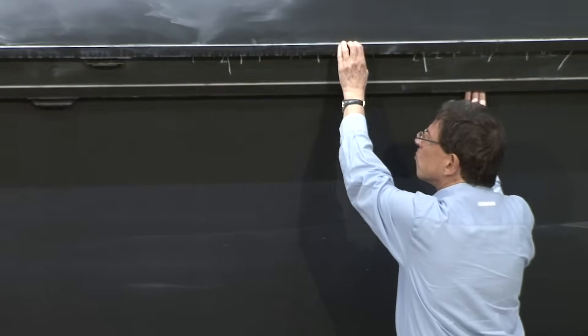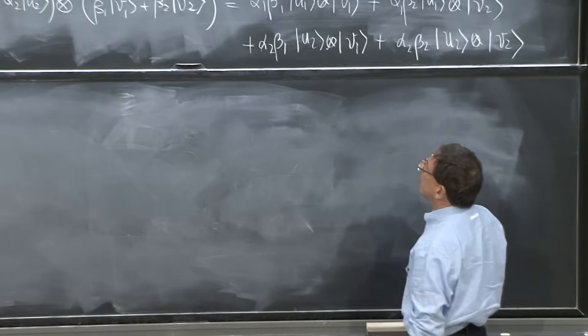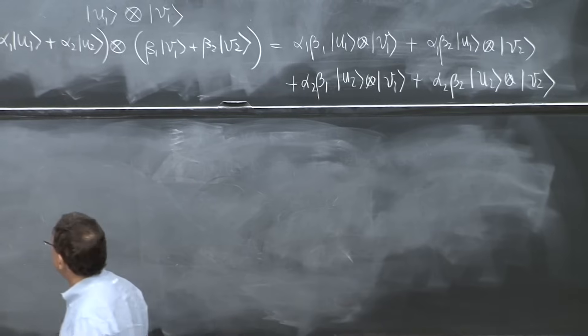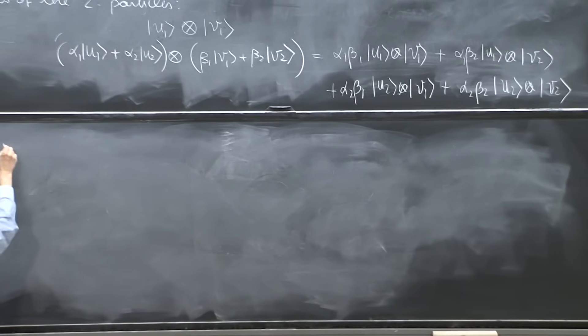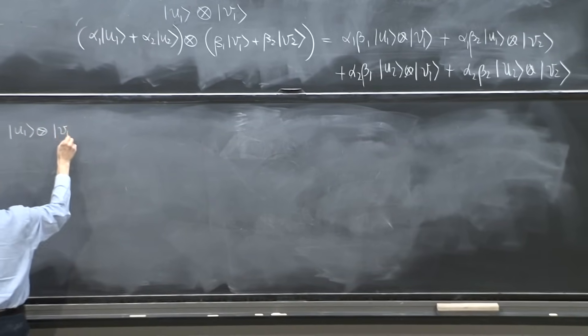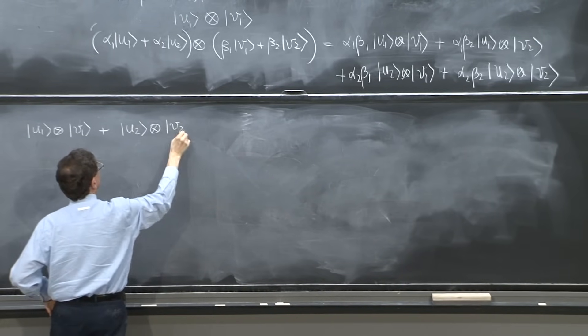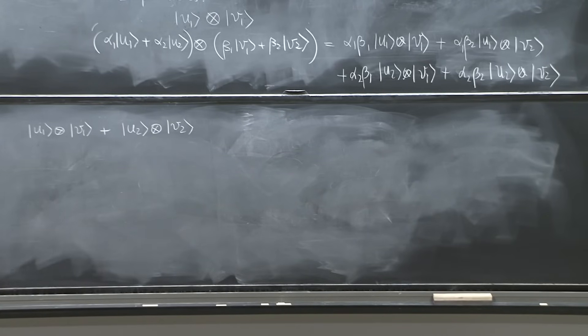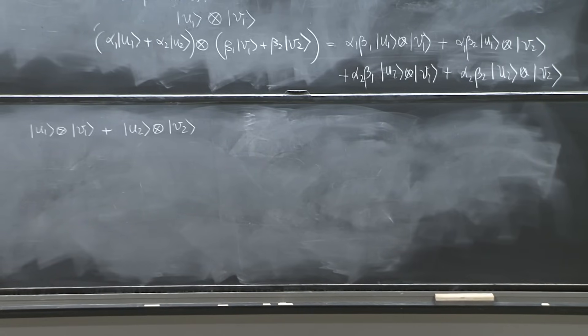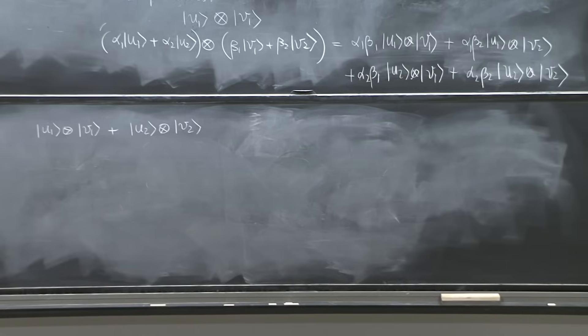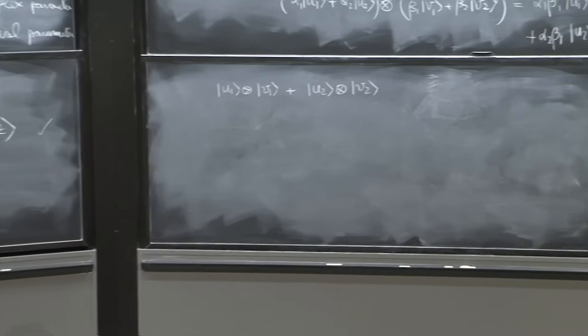So actually I could try to write a different state now. We're just experimenting. But here is another state, u1 v1 plus u2 v2. Now this is a state that actually seems different. Why different? Because I don't seem to be able to say what particle 1 is doing and what particle 2 is doing separately.